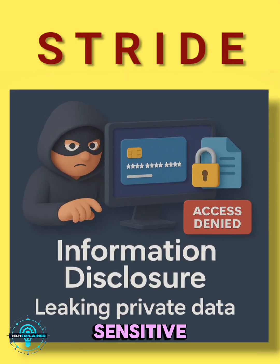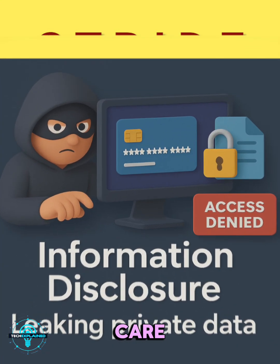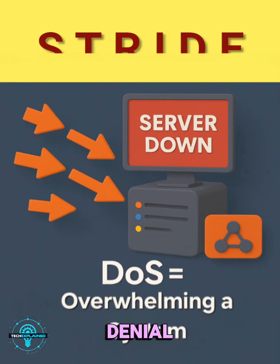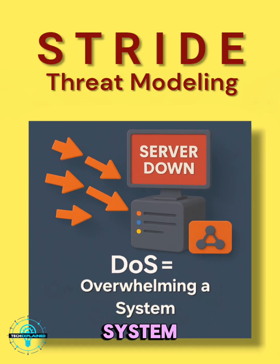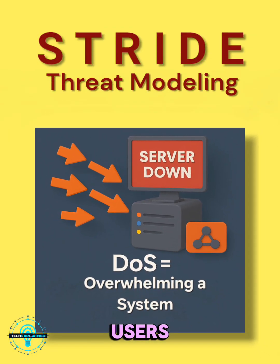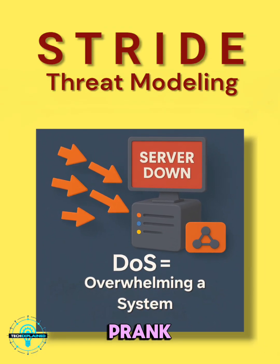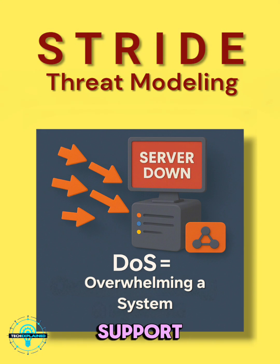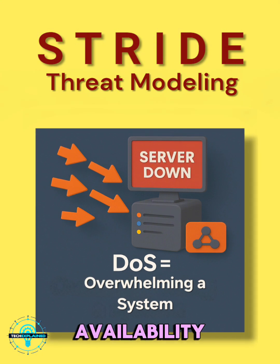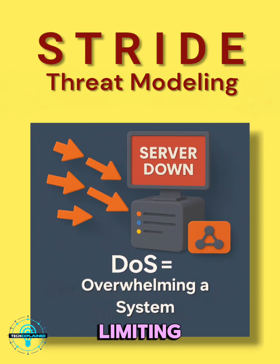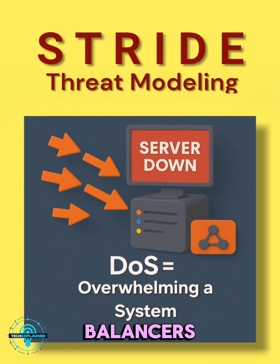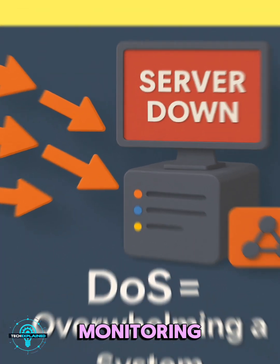Treat sensitive info with care. Denial of service means flooding a system so it can't serve real users, like prank calls jamming up customer support. That affects availability. You can defend with rate limiting, load balancers, and traffic monitoring.